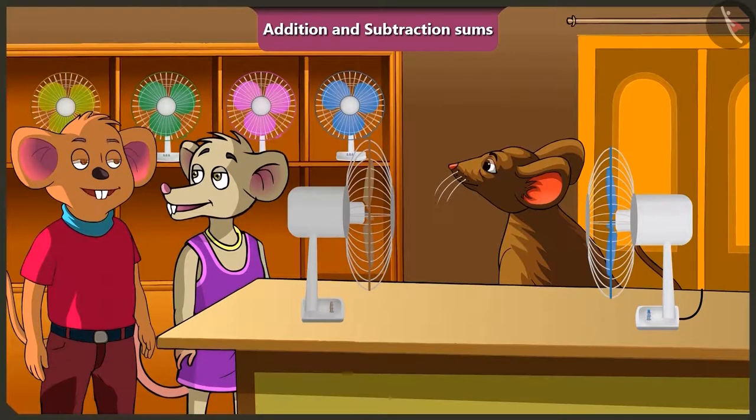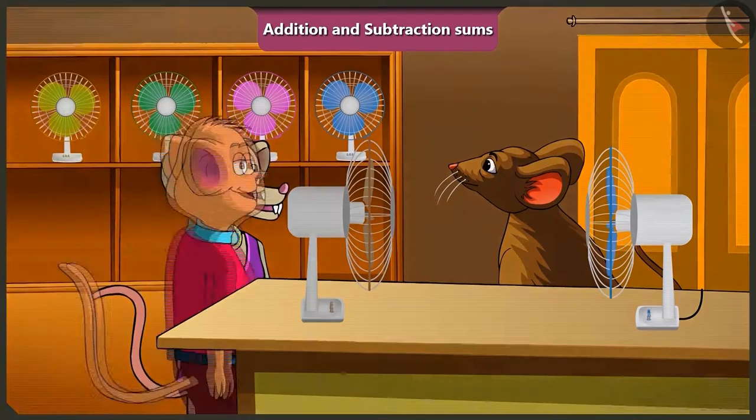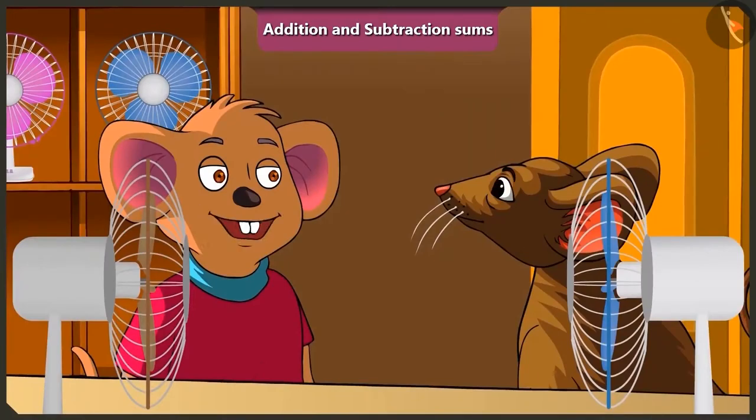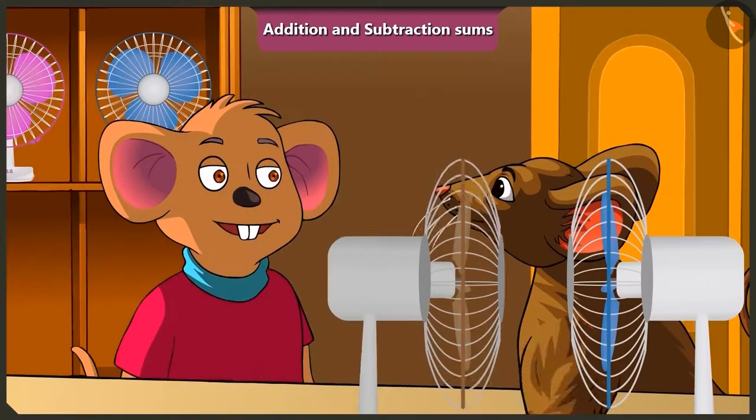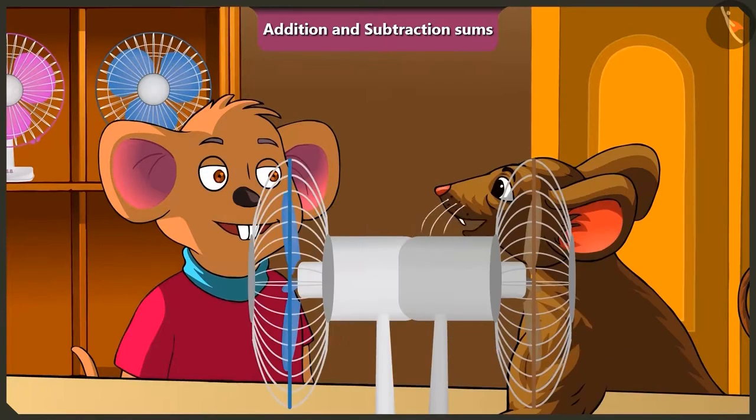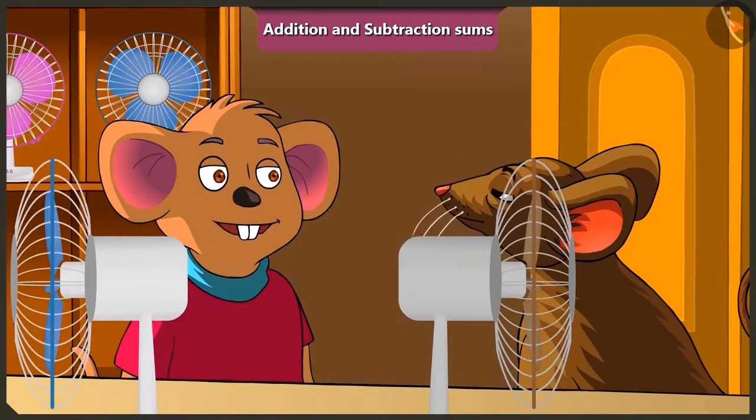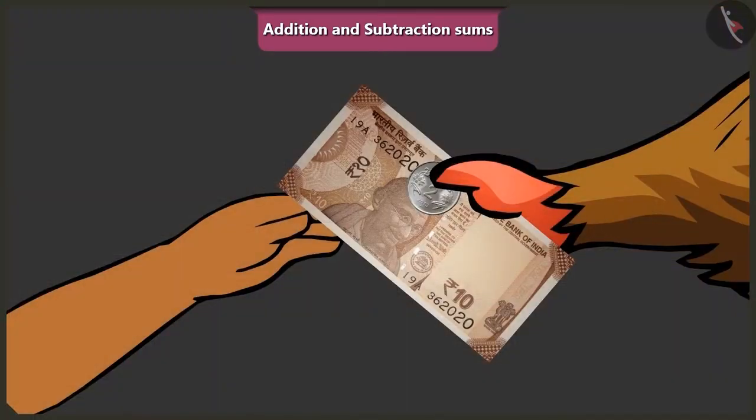You are right, Chichi. So Choo Choo, buy the new fan now. Okay, Chichi. Brother, take these 58 rupees and this old fan. Take this Choo Choo brother, your new fan and the balance 12 rupees.